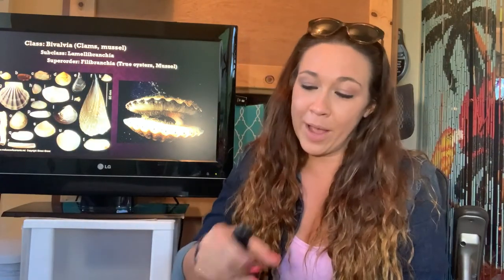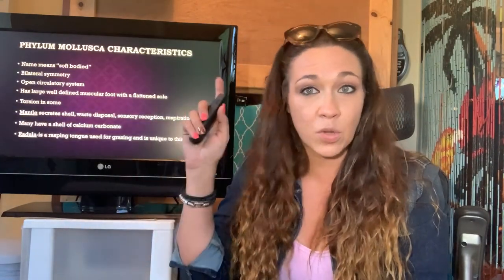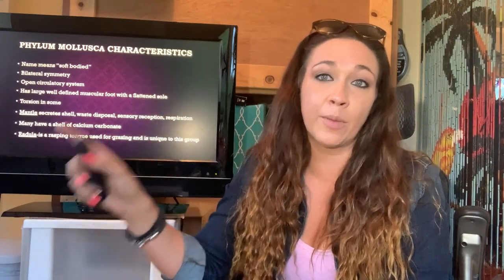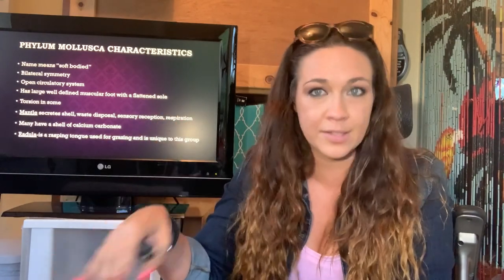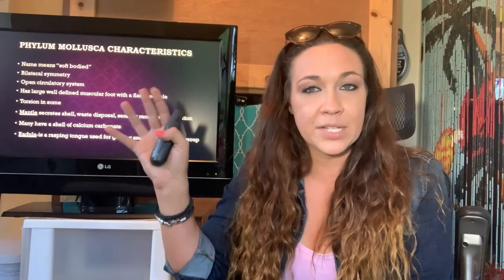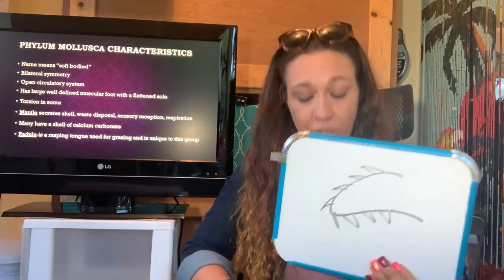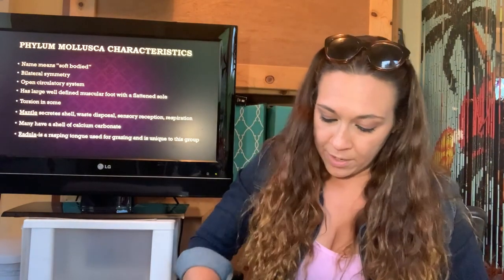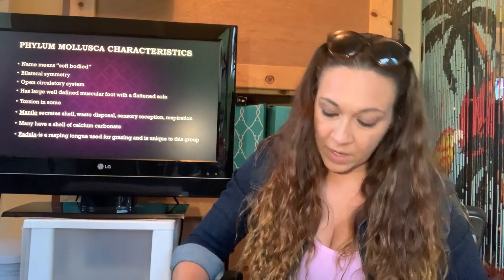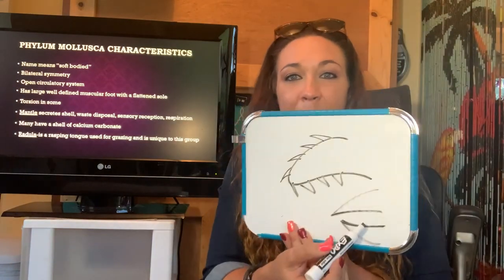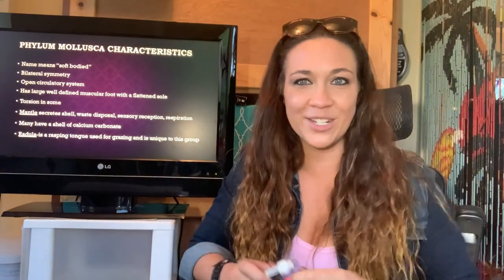Let's get to the nitty-gritty and learn about each one of these classes. All of these different groups are going to have these Mollusca characteristics, though some are modified. Sometimes you don't have a radula that looks like a rasping tongue — sometimes you have a radula that looks like a bird beak. We're going to learn who has those in just a second.